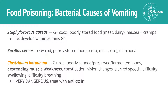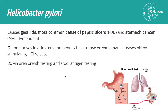With Clostridium botulinum, you get a big list of symptoms — especially descending muscle weakness. Botulism is very dangerous, so you have to treat it with an antitoxin, as it causes a paralysis. Alright, we're almost done — good job sticking with me.